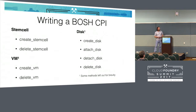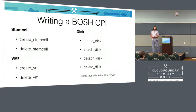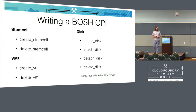What's in a BOSH CPI? There are basically three entities you cope with: stemcells, which are base OS images, VMs, and disks. There are a couple of methods a CPI has to implement that work on these entities, like creating stemcells and deleting them, same for VMs. For disks, it's also attaching and detaching them from VMs. There are a couple more minor methods, but implementing these is the main thing you have to do when you implement a BOSH CPI.